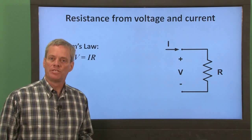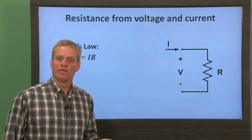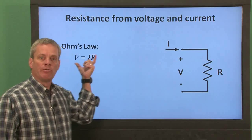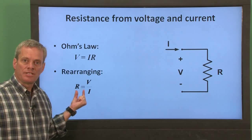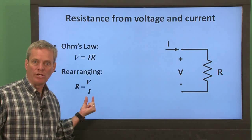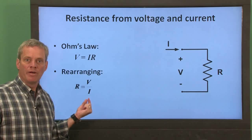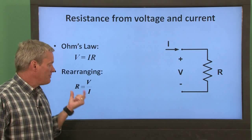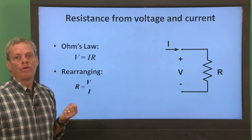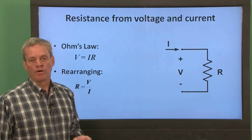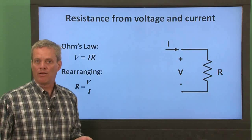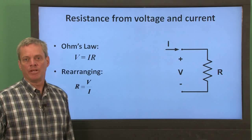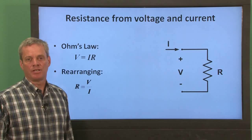Finally, let's talk about estimating resistance from a measured voltage and current. Ohm's law tells us that voltage is resistance times current. If we rearrange this, we can calculate resistance as the ratio of voltage to current. Therefore, if we measure both the resistor voltage and the current through the resistor, we can estimate the resistance from those measurements. We can measure either voltage or current with our DMM, but we can only measure voltage with our analog discovery. The quick start video on the voltmeter instrument will provide background information on measuring voltage with the analog discovery.